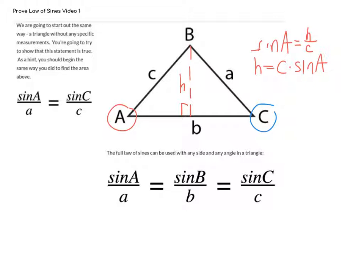I'm going to do the same thing on the other side with sine of C. So sine of C is equal to h over a, and getting h by itself, I get a times sine of C.